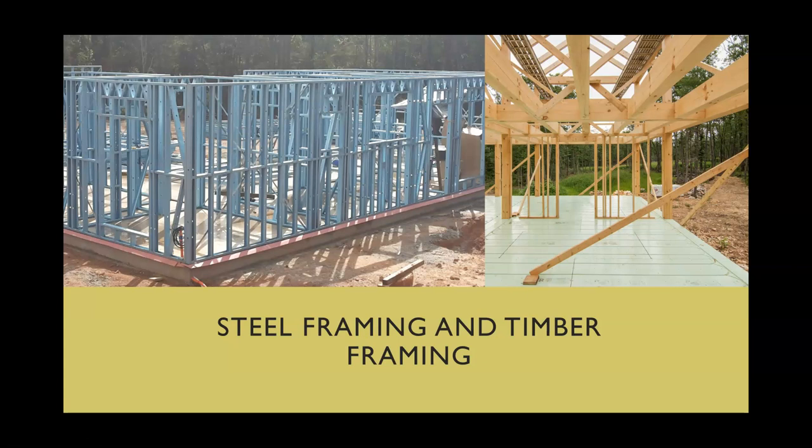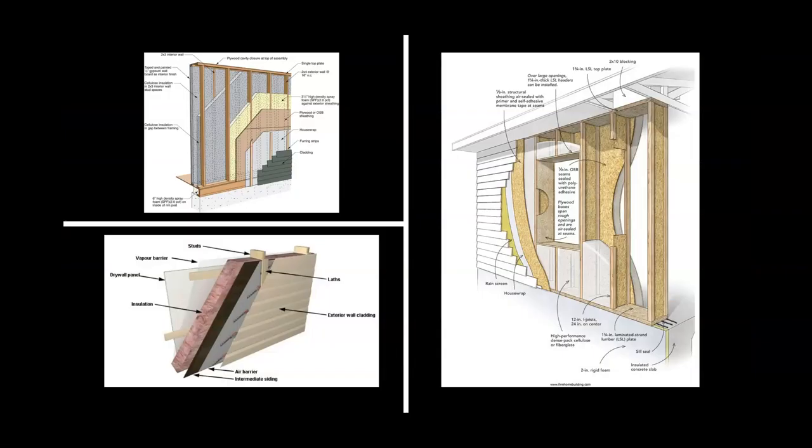Steel framing and timber framing — this is basically just looking at the difference: steel framing on the left, timber framing on the right. Very simple. You have many different wall structures — varying, all kinds of different types. A lot of times it's based on location and environment. Some walls have to be more insulated than others. Just take a look at these — you don't have to remember any of this. Just look at some of the names and have those in mind. We'll get more into some of those a bit later.